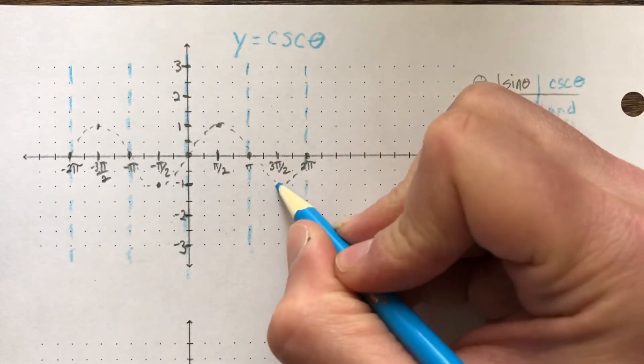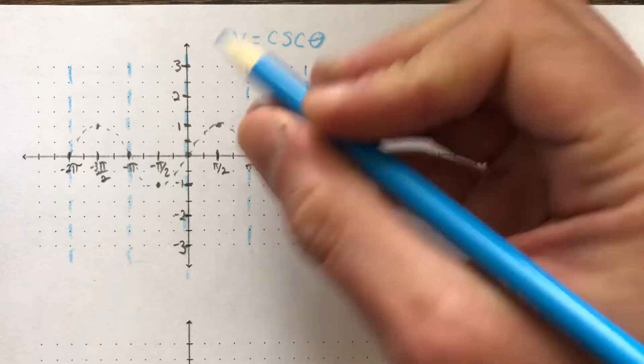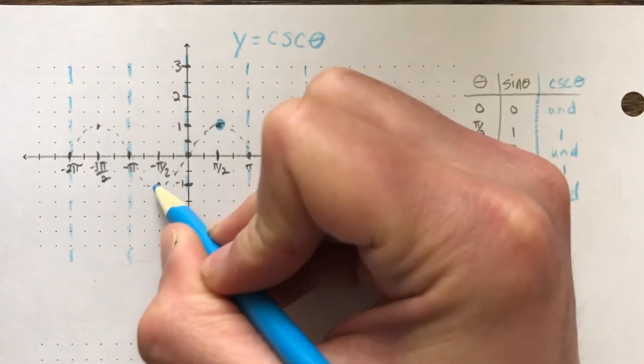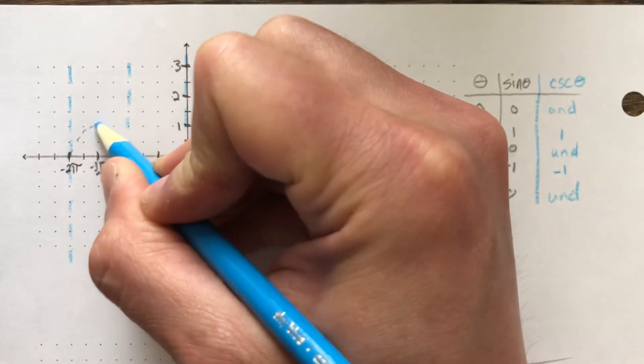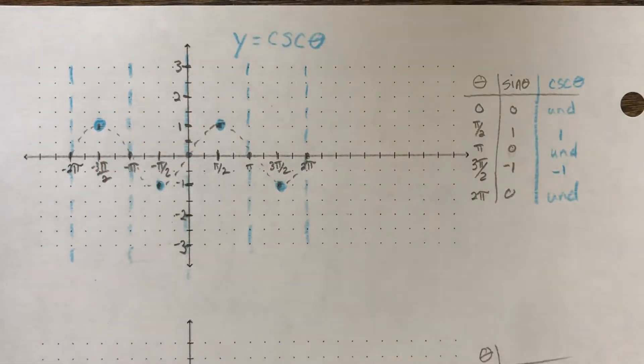And these points, because the reciprocals of negative 1 and 1 are the same, they're just 1 and negative 1, so these points are going to stay, okay?